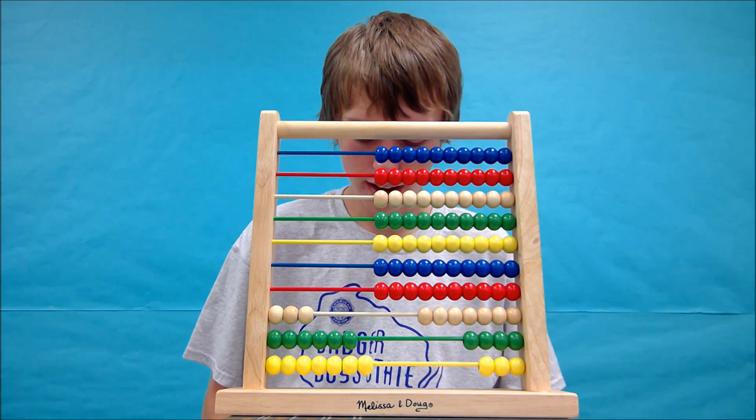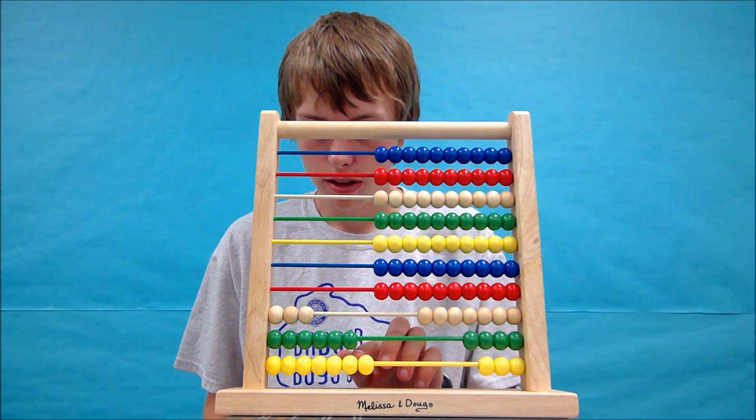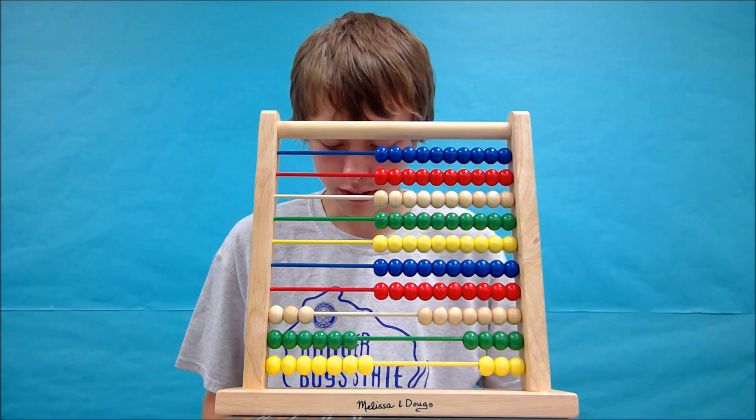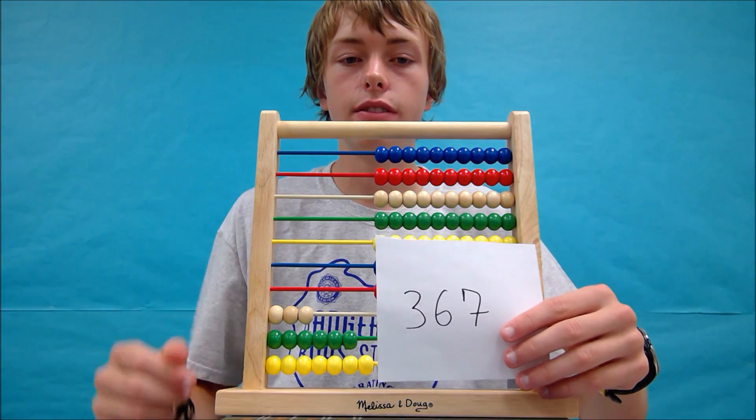This is where having a sheet of paper gets more helpful because we have larger numbers. So let's count out the numbers. 1, 2, 3. Then we have 2, 4, 6. 2, 4, 6, 7. So our answer to this problem is 367.